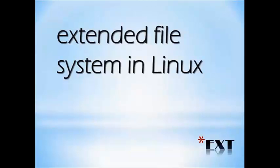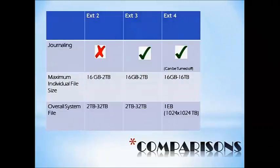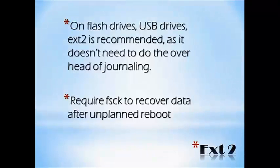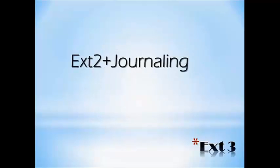Filesystems in Linux are known by EXT, which stands for Extended Filesystems. We have different versions: EXT2, EXT3, and EXT4. The only difference between EXT2 and EXT3 is that EXT3 has journaling. EXT4 is a much improved version, with a larger maximum individual file size as well as overall filesystem size. EXT2 is usually preferred on flash drives and USB drives, as it doesn't need to do the overhead of journaling. It requires FSCK to recover data after an unplanned reboot.